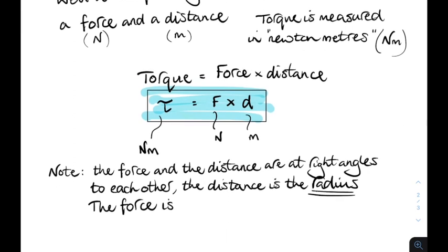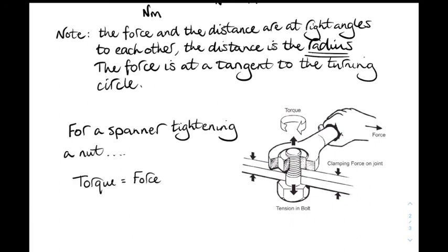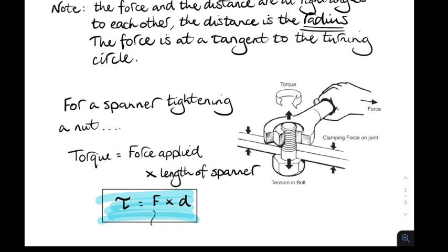And if we think about it in terms of circular motion, the force is acting at a tangent to the circle. And the distance is the radius of that turning circle. You're more likely to meet it in terms of things like a spanner tightening a nut or loosening a nut. The torque is the force that you apply times the length of the spanner. So tau equals F times D. I think on your relationship sheet, it's tau equals FR. That's torque.